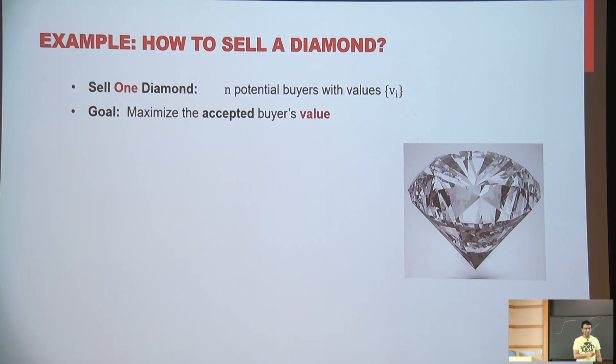So there are n potential buyers. Each of them has some value, which may or may not be known to you. That's going to be the goal of the talk. Your goal is to sell this diamond to somebody who has the highest value and basically charge them that much money. So your goal is to maximize revenue. And how do you do it?